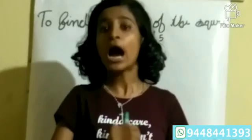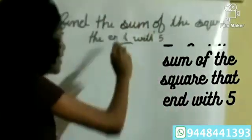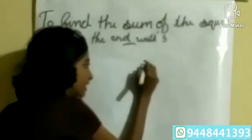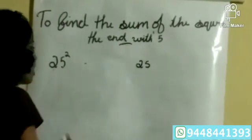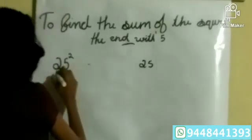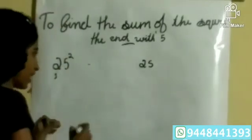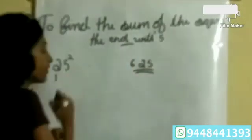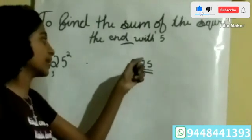Next I am going to show you how to find the square of numbers that end with 5. For example, 25 squared. First, we write 25 as the last two digits — we know the square of 5 is 25. Then 2 plus 1 equals 3, and 2 into 3 equals 6. So the square of 25 is 625.